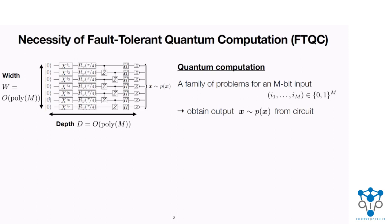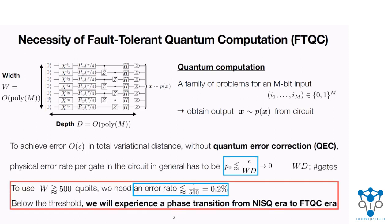Quantum computation may perform a quantum circuit of polynomial size — width times depth — to solve a family of computational problems of an n-bit input. If we run this circuit directly using physical qubits, the noise of quantum devices may change the outcome into wrong ones. But the computation needs to be performed correctly even without correcting errors. To achieve overall error epsilon, without quantum error correction, the physical error rate per gate has to be smaller than epsilon divided by the maximum number of gates in the circuit — that is, width times depth.